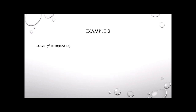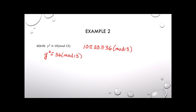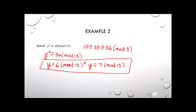Here's another similar example — you could pause and try it first. We know that 10 is congruent to 23, which is congruent to 36, mod 13. And 36 is a perfect square, so y squared is congruent to 36 mod 13, giving y congruent to 6 mod 13, or y congruent to negative 6, which is positive 7, mod 13.